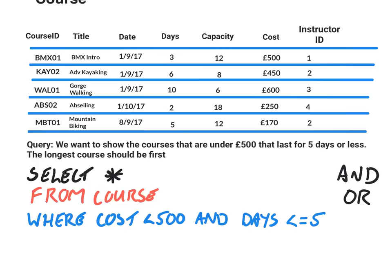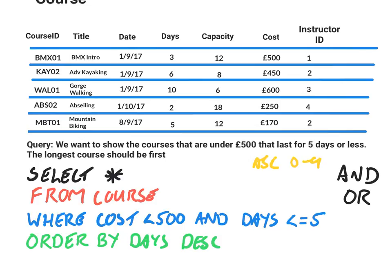Last but not least, the sort order says the longest course should be displayed first. So we ORDER BY days in descending order. Remember: ascending is 0 to 9 or A to Z, and descending is 9 to 0 or Z to A. So the longest course comes first.